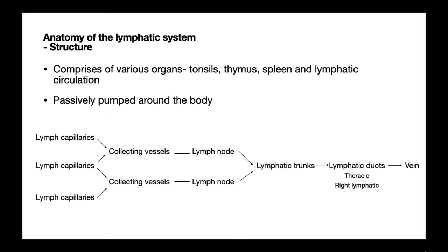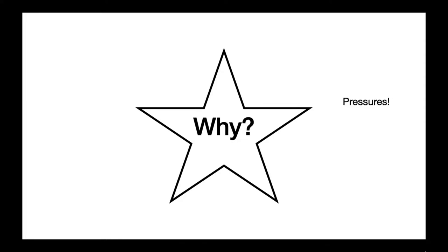Finally, the ducts drain into veins and enter the systemic circulation — key examples here are the jugular and the subclavian veins. You'll notice these are both located in the upper half of the body. Why might this be? The reason is pressure: the lungs produce a negative pressure, and this negative pressure helps lymph to flow into the vein — which is important because lymph is not actively pumped around the body.